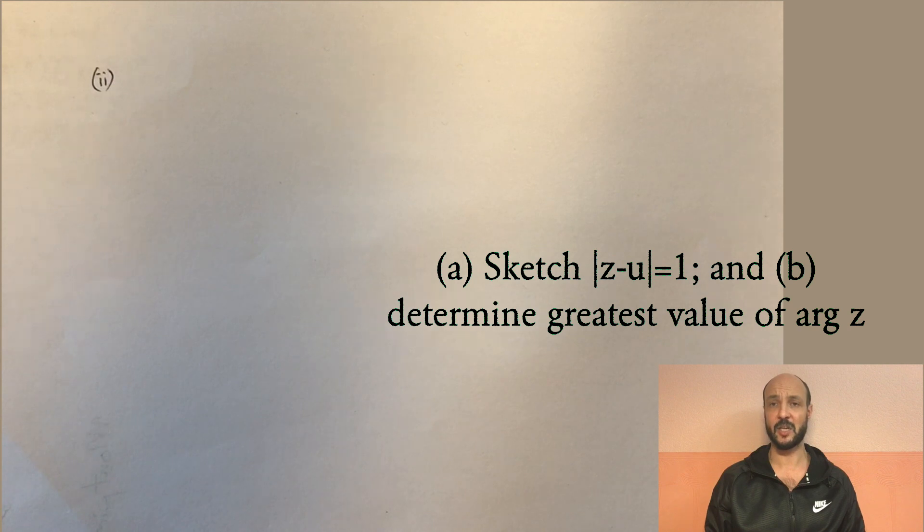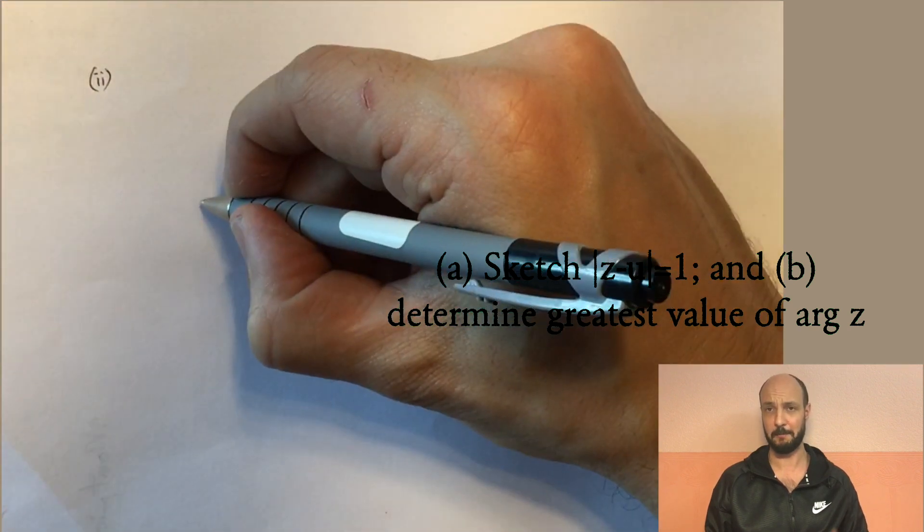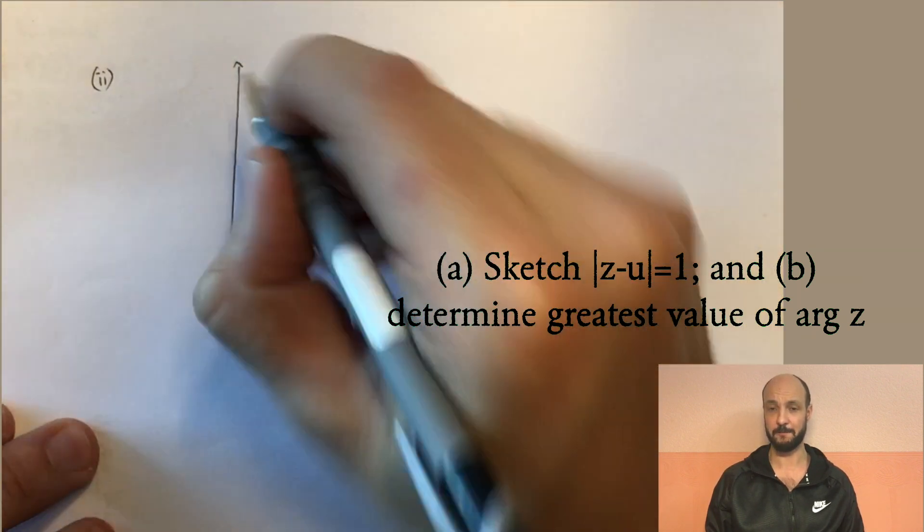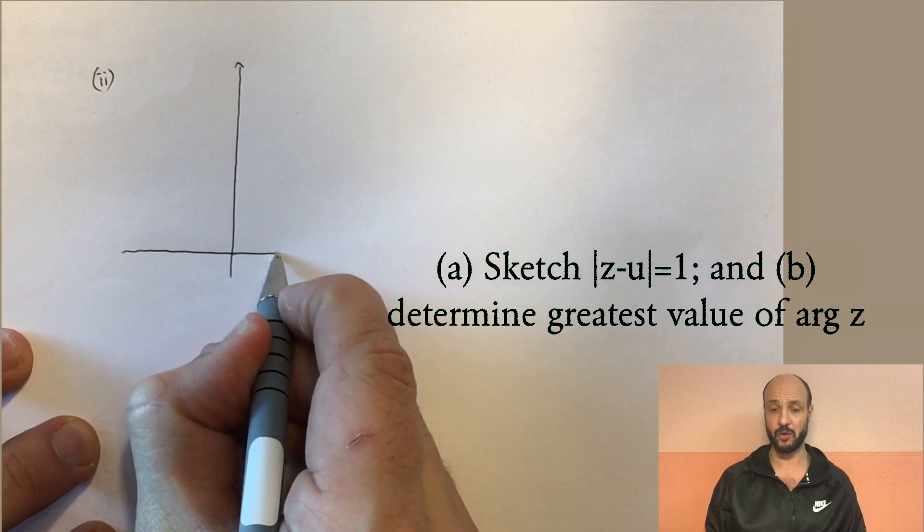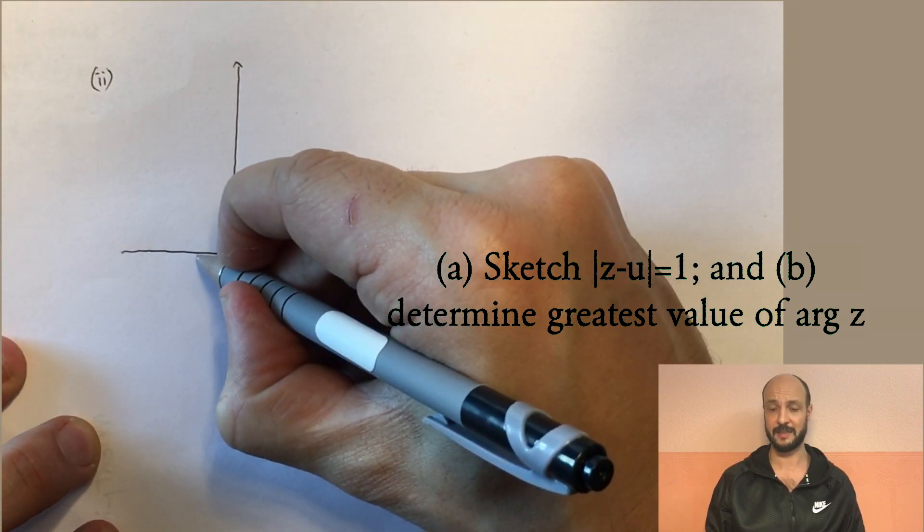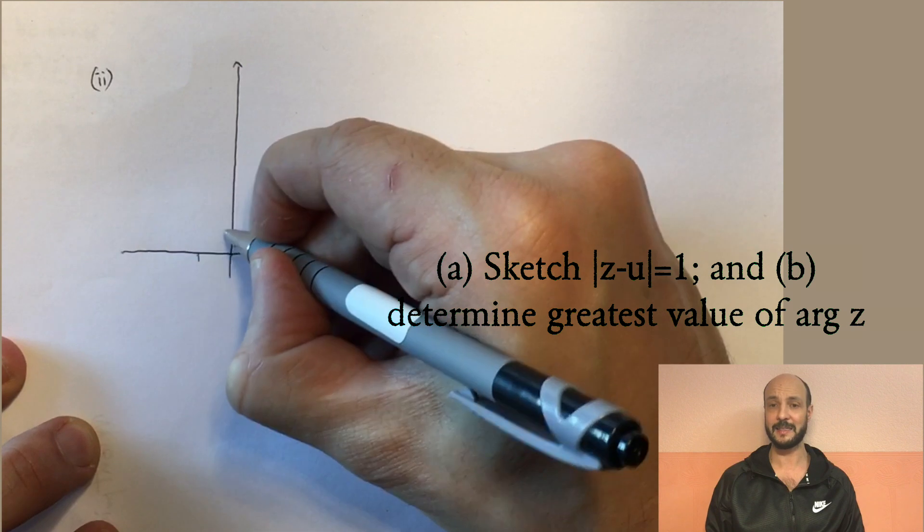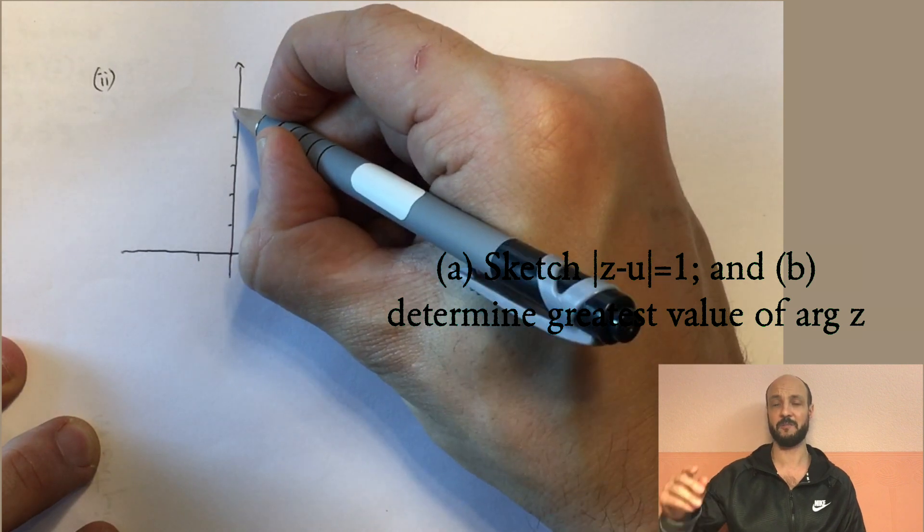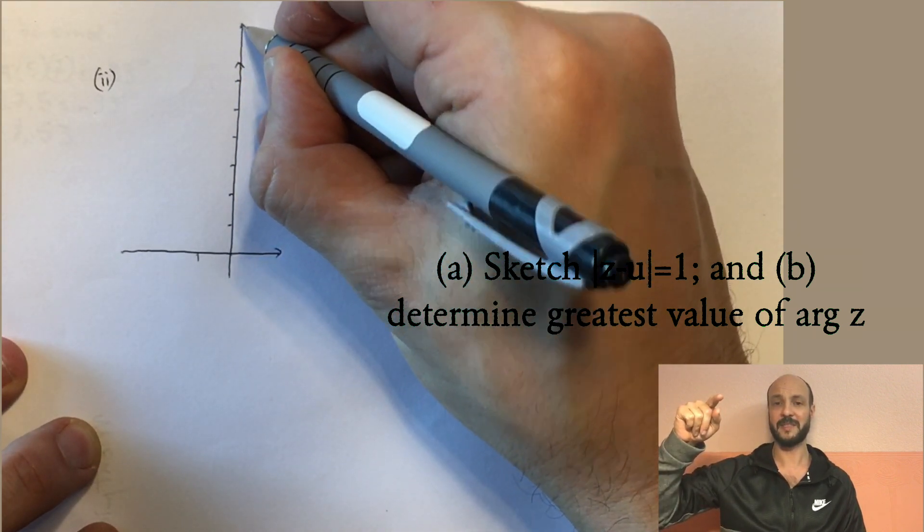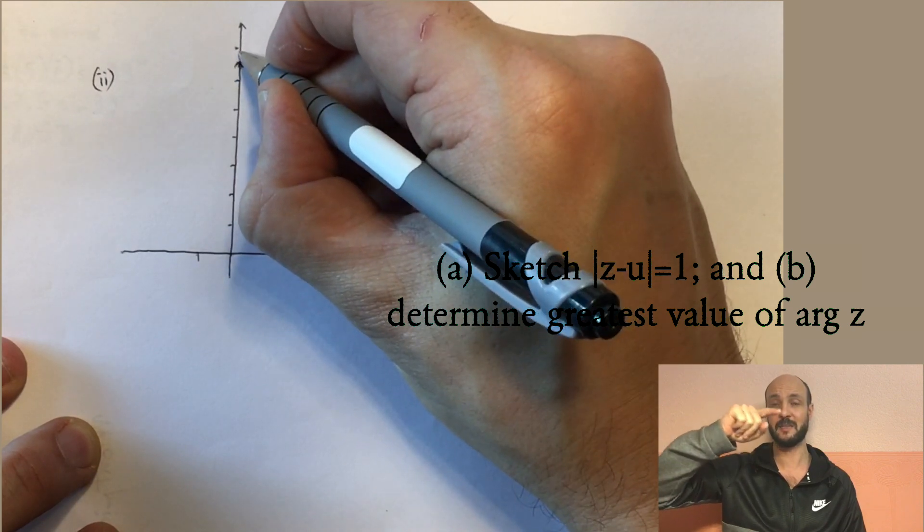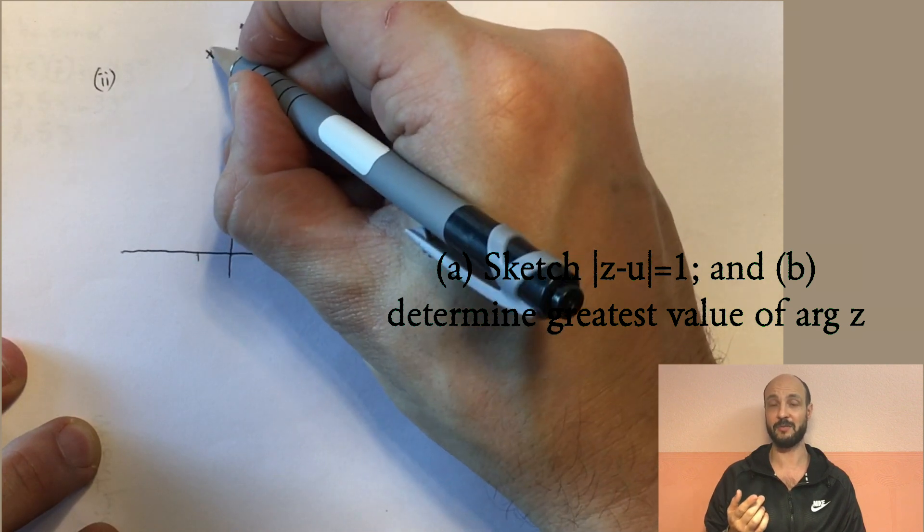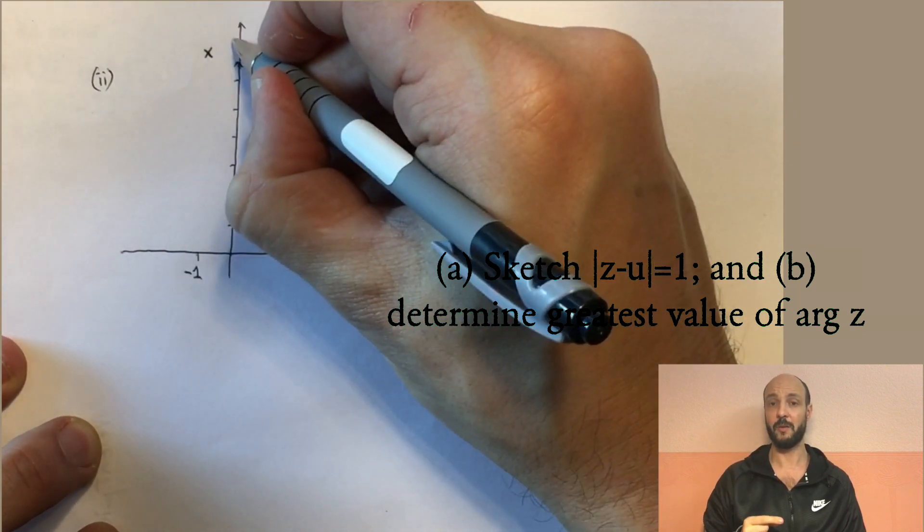So the second part has two bits to it. The first bit was to sketch a locus of points, which means a path of points following this rule. And then the second part was to define the greatest value of the argument. So the first part is straightforward. We can draw our Argand diagram, draw the real x-axis and the imaginary y-axis. And we know that the centre of our circle, we've got a locus of points here, which are all the same distance from this given point u. So if all points are the same distance from a given point u in a two-dimensional plane, that means we're dealing with a circle. And the circle here has radius one because they're all the distance of one from the given point.